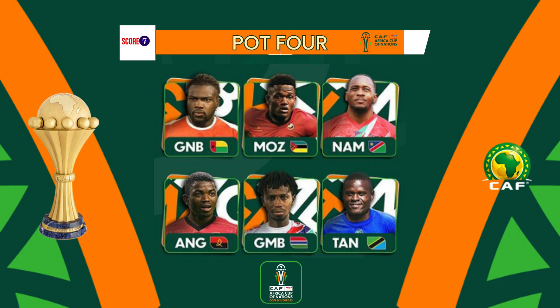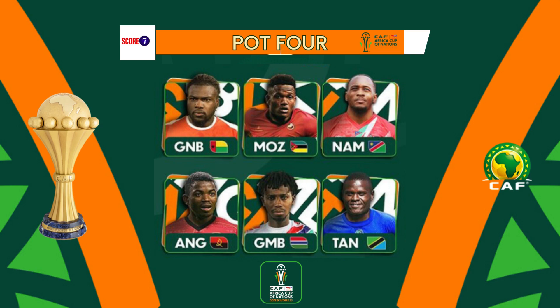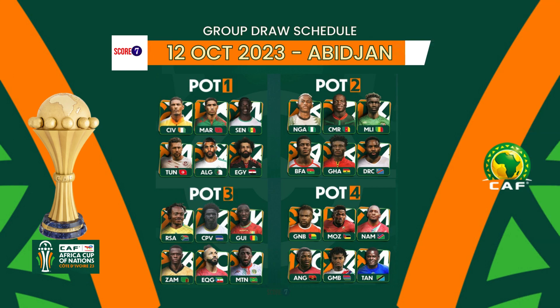Six groups of four teams will be picked from these pots. The games in each group will already have been assigned to a specific location prior to the draw, though this information is not yet confirmed.